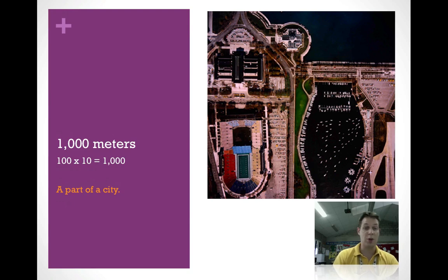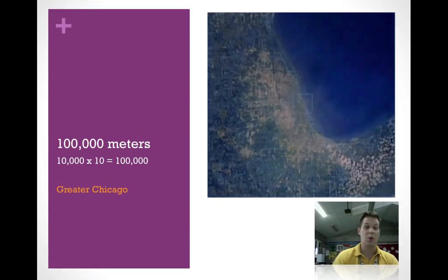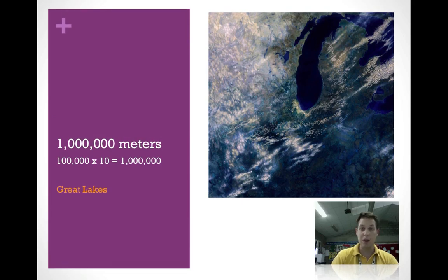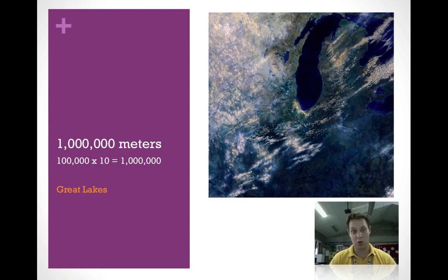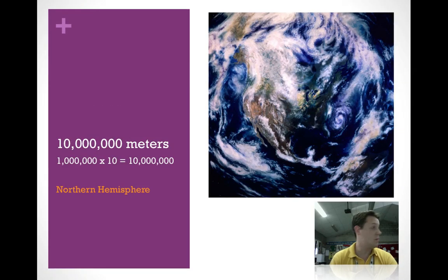Take 1,000 meters times 10 and we get 10,000 meters — now we can see all of downtown Chicago. Take 10,000 meters times 10 and we get 100,000 meters — now we see the entire city of Chicago and some suburbs. Take 100,000 meters times 10 and we get 1,000,000 meters — now we can see part of the United States, part of Canada, and one of the Great Lakes. Multiply 1,000,000 meters by 10 and we get 10,000,000 meters, seeing the entire northern hemisphere.